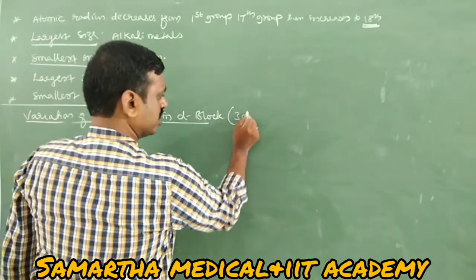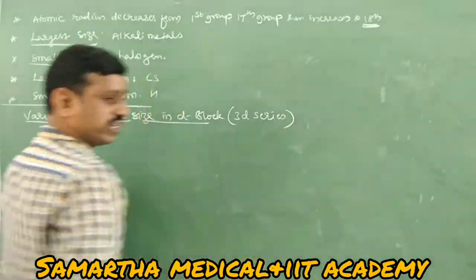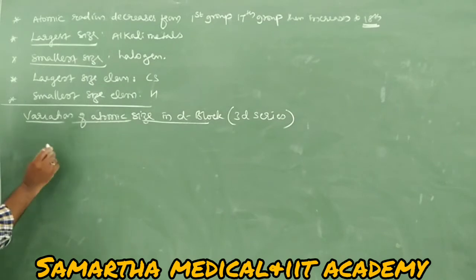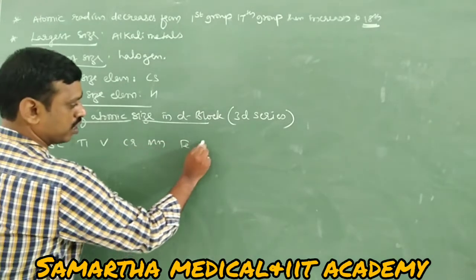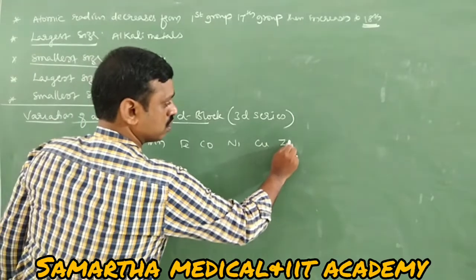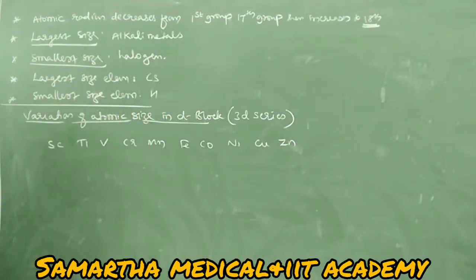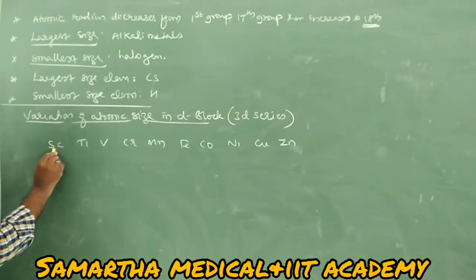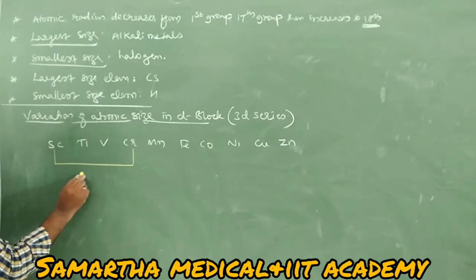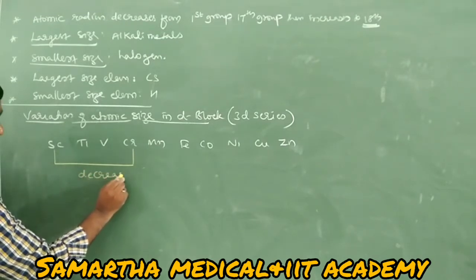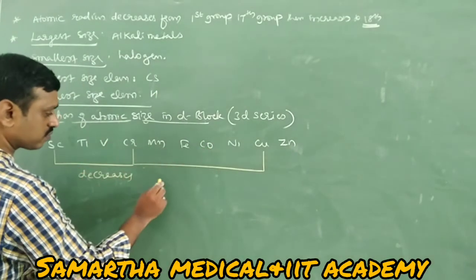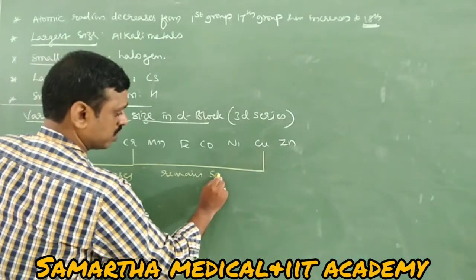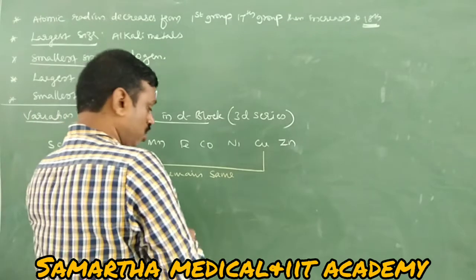In d-block, we study the 3D series: scandium, titanium, vanadium, chromium, manganese, iron, cobalt, nickel, copper, zinc. In this series: atomic size decreases from scandium to chromium; from chromium to copper, atomic size remains almost constant; from copper to zinc, atomic size increases.